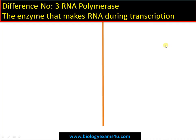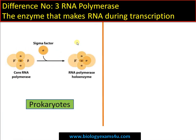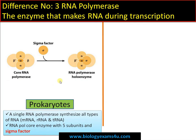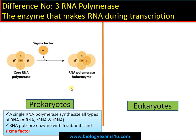Difference number three is regarding RNA polymerase — the enzyme that makes RNA during transcription. In prokaryotes, there is a single RNA polymerase that synthesizes all types of RNA: mRNA, rRNA, tRNA, etc. This RNA polymerase consists of five subunits with an additional Sigma factor, making it a complete or holoenzyme. The Sigma factor is essential for binding to the promoter sequence.